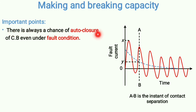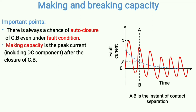Now let's discuss making capacity. One point should be clear: there is always a chance of auto-closure of a circuit breaker even under fault conditions. The circuit breaker has the facility of auto-closing. Whenever a fault happens, the circuit breaker disconnects the path, and after some time it again tries to close the path — it tries to make the circuit closed. From there the concept of making capacity comes into existence.